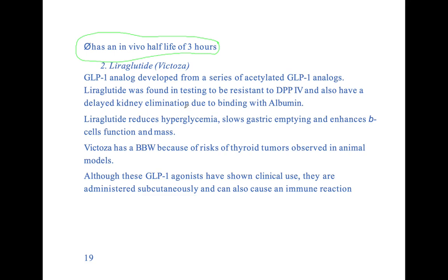Liraglutide is also a GLP-1 analog, developed from a series of acetylated GLP-1 analogs. It is resistant to DPP-4 and has decreased kidney elimination because it binds to albumin. There is always a chance of immune reaction with these compounds because they are biological compounds injected into the human body.